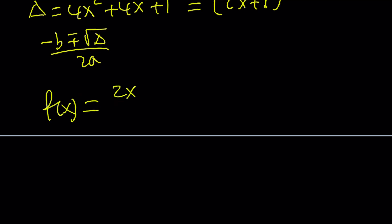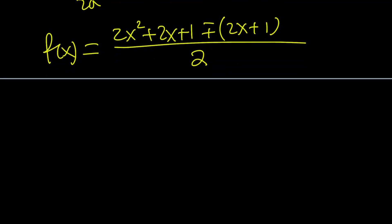So f of x becomes the following from here. Negative b, which is the opposite of the coefficient of f of x, plus minus the square root of delta which is 2x plus 1. Let's write that in parentheses because we're going to have two solutions, and all of that is divided by 2, which is 2a. Great.